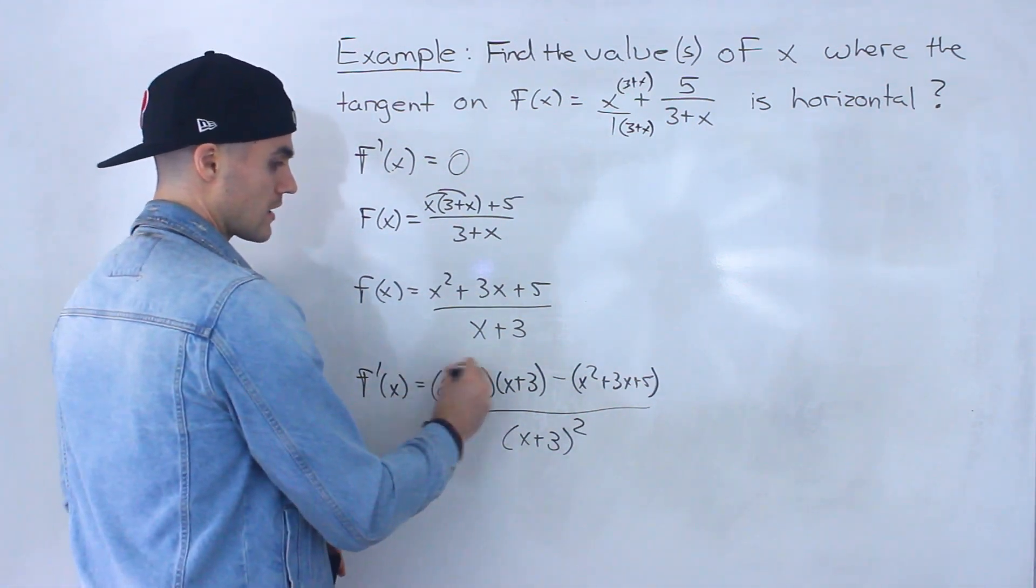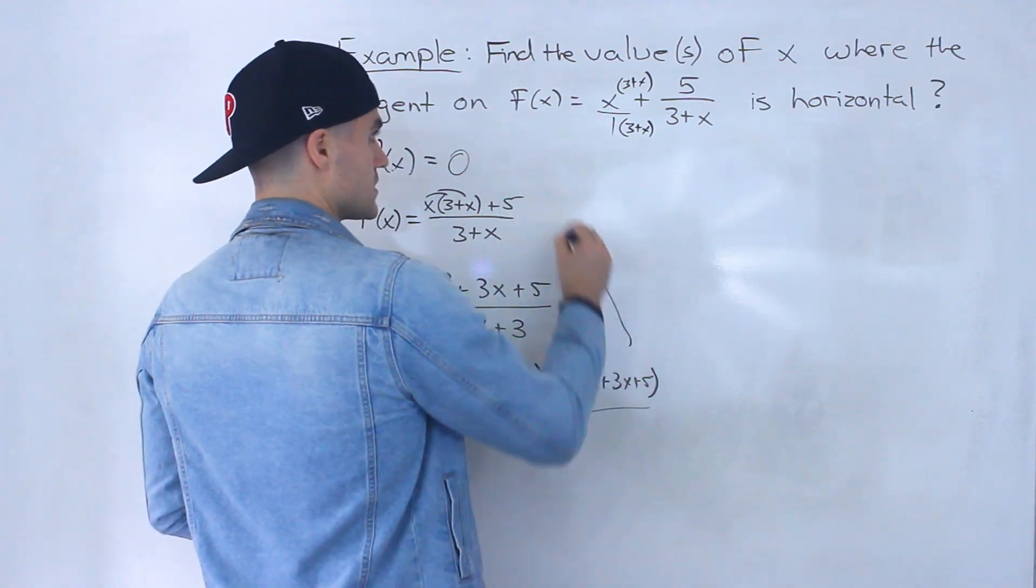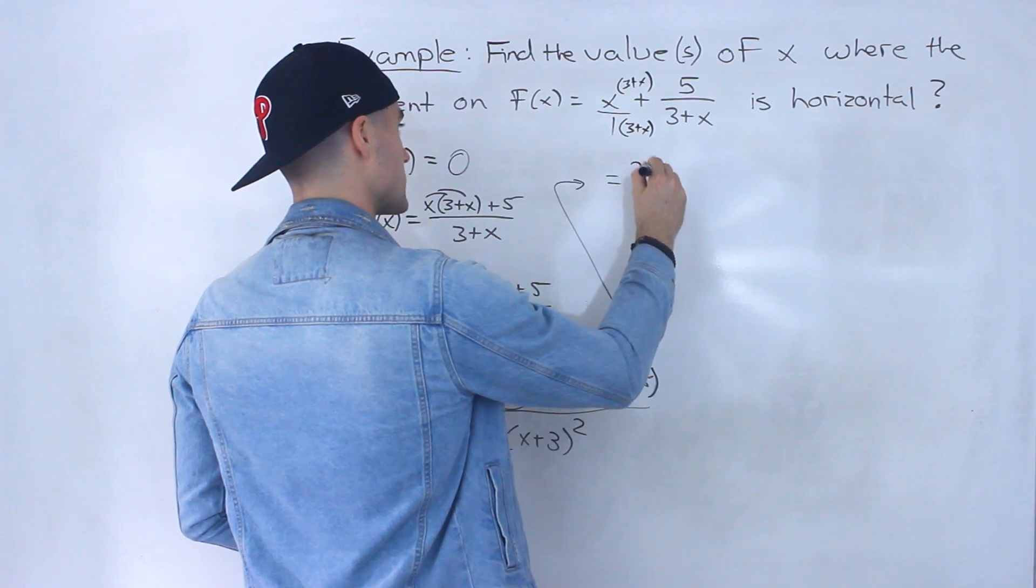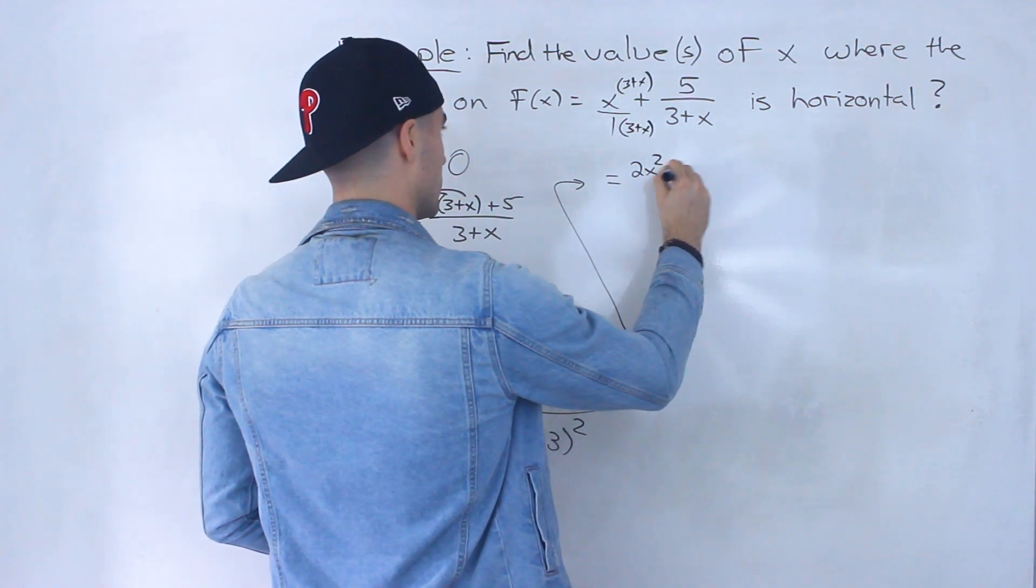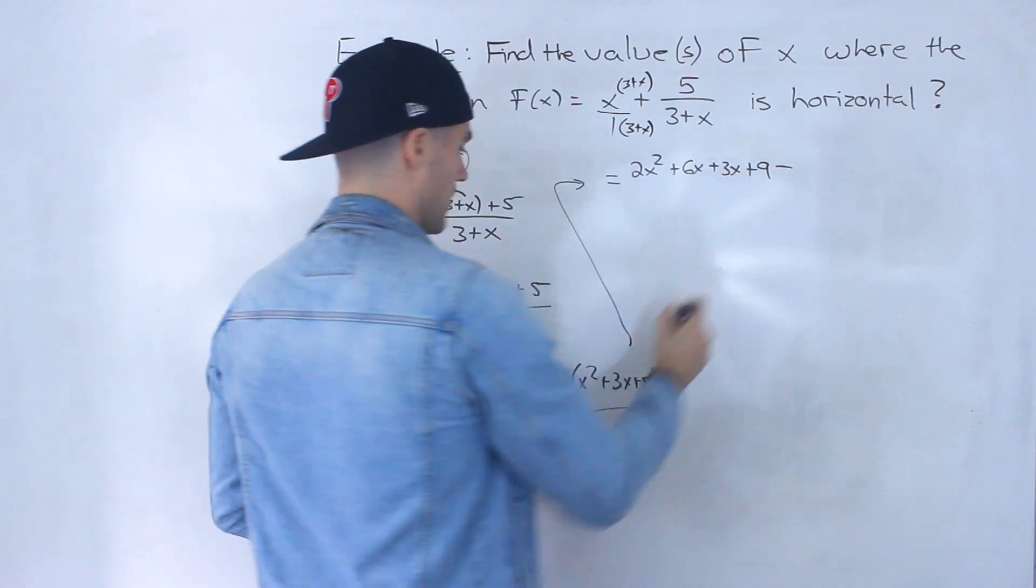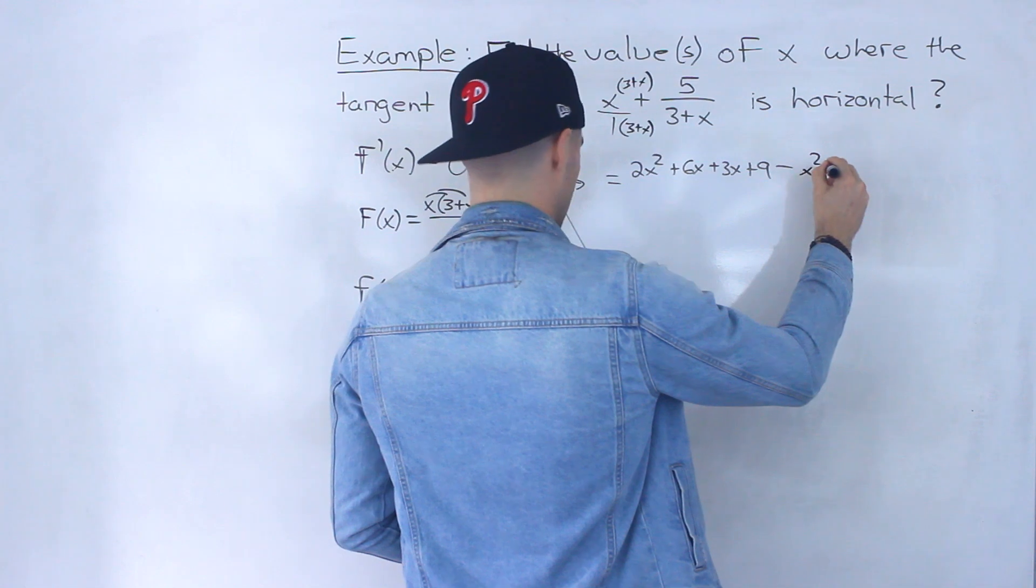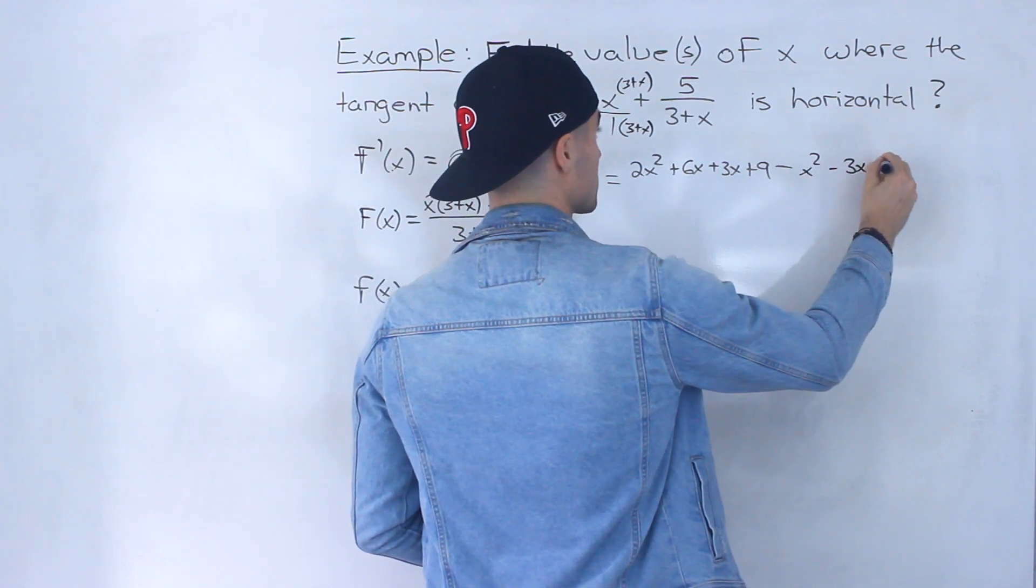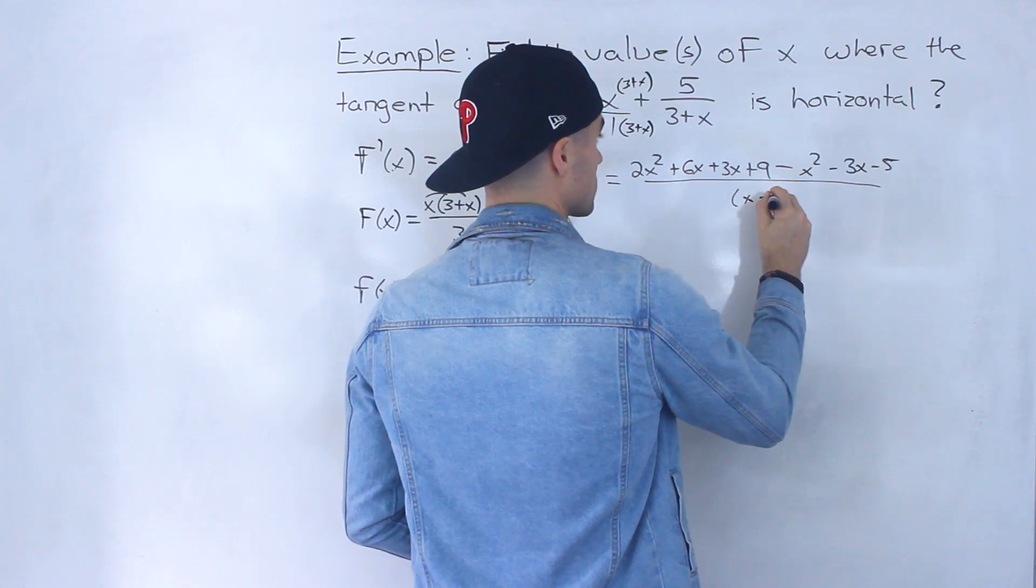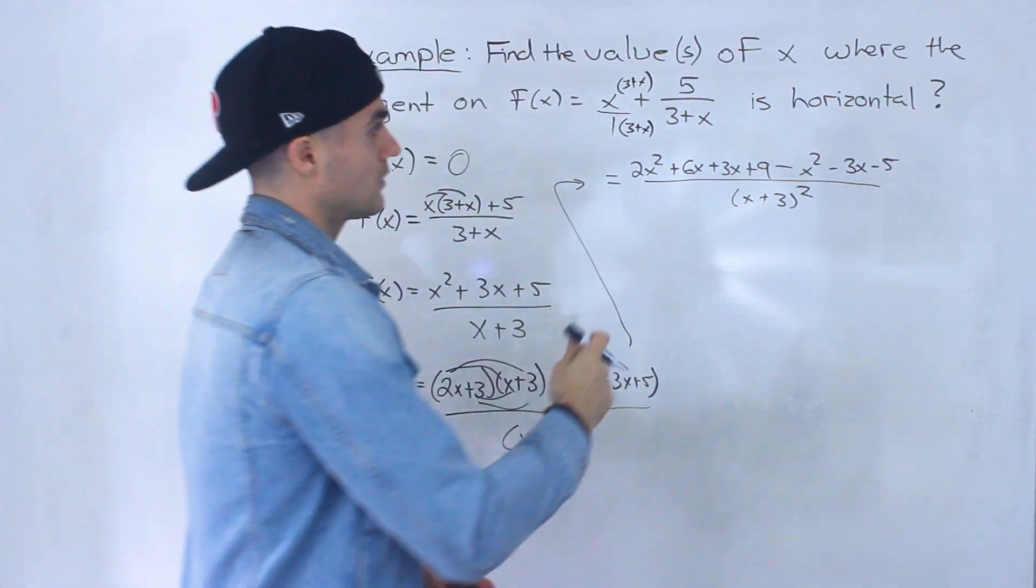And now what we can do is simplify everything. So we're going to FOIL this out. So continuing this up here, we would end up with 2x² + 6x + 3x + 9 minus, distribute the negative inside the bracket, so minus x² - 3x - 5, all over (x+3)².